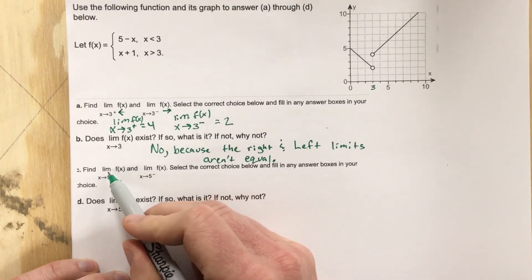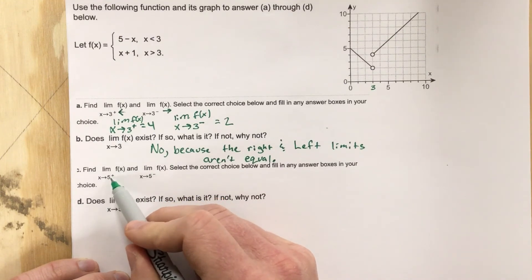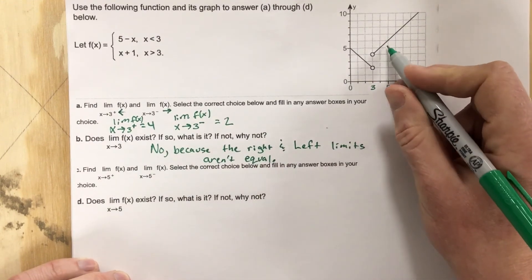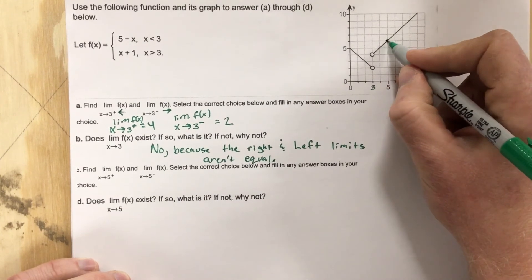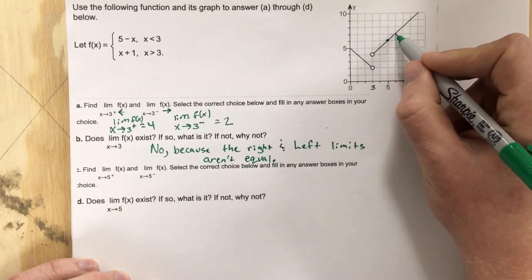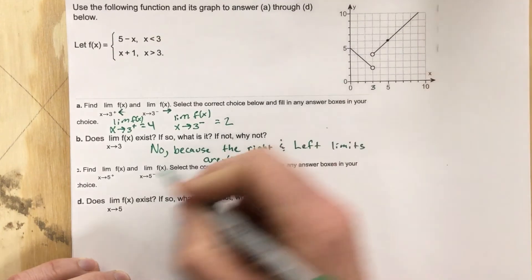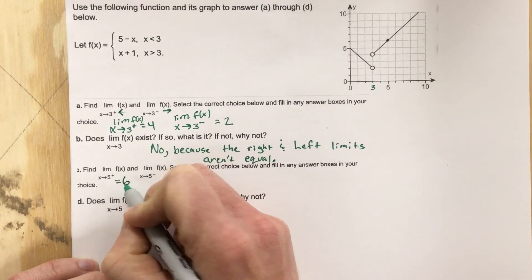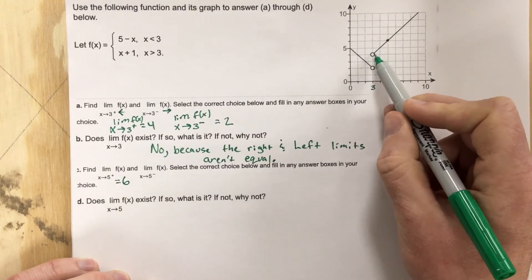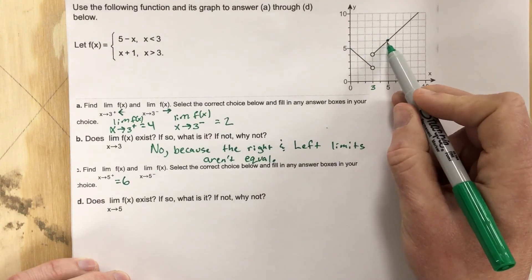Now it says the limit of f of x as x approaches five from the right. So let's go to five and we're looking at just the spot right here. As we approach it from the right, we get x equals six. So we're going to say that this equals six. And as we approach it from the left, we also get six. So this equals six as well.